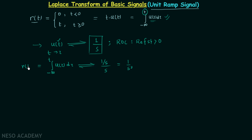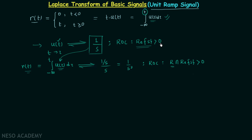This integral of u(tau) is nothing but our ramp signal, so the ramp signal has the Laplace transform 1 over s squared. Now for the region of convergence: after performing the integration, the ROC is R intersected with the region where the real part of s is greater than 0, where R is the ROC of the Laplace transform of the original signal. In our case, R is also the real part of s greater than 0.